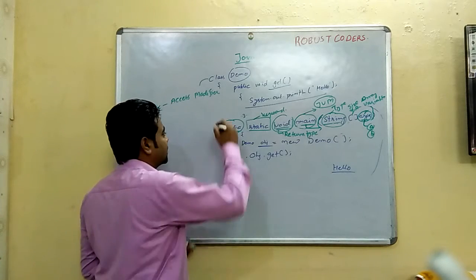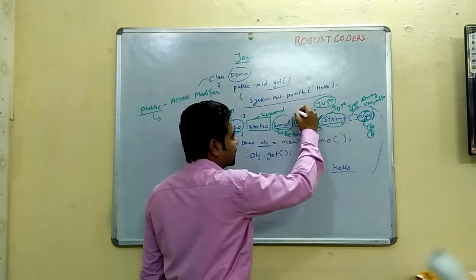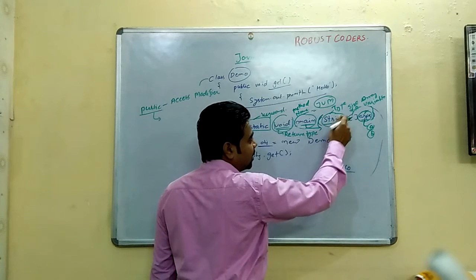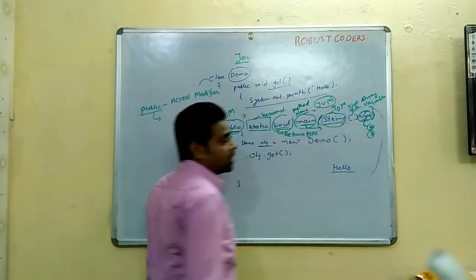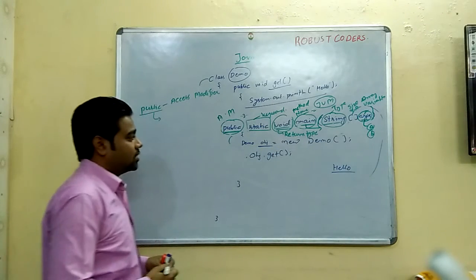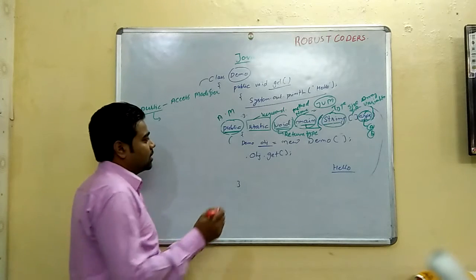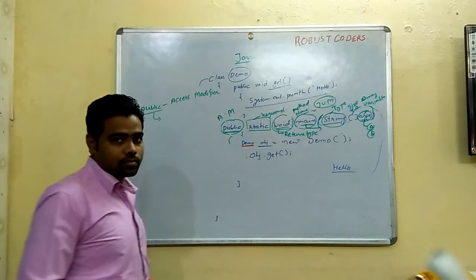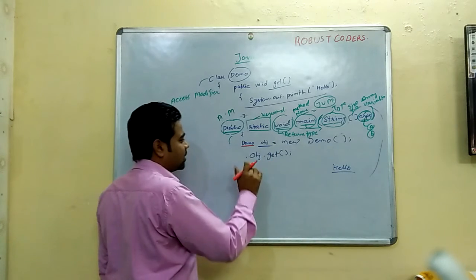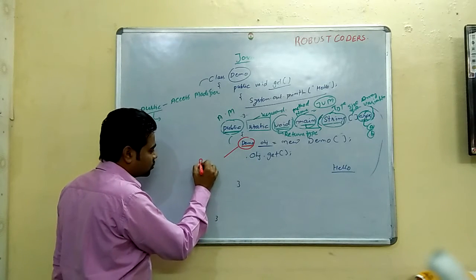To summarize the main method: public is the access modifier, static is a keyword, void is the return type, main is the method name, String is the type, and args is the variable name. Next, Demo obj equal to new Demo - this Demo is a class, not a primitive type.